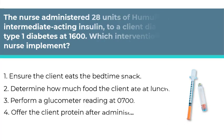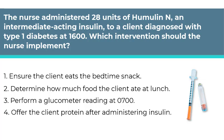Here's our next question. The nurse administered 28 units of Humulin N, an intermediate-acting insulin, to a client diagnosed with Type 1 diabetes at 1600. Which intervention should the nurse implement? Number 1: Ensure the client eats the bedtime snack. Number 2: Determine how much food the client ate at lunch. Number 3: Perform a glucometer reading at 700 hours. Number 4: Offer the client protein after administering the insulin. This is an application question in the implementation phase of the nursing process. The key is to look at the descriptor — intermediate-acting insulin — which provides a clue to the correct answer by hinting at the drug action.